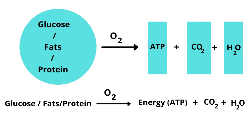Aerobic energy production means the production of energy with oxygen. Energy can be generated over 2 to 45 minutes during long periods of activity at very low intensities. Glucose, protein, and fatty acids react with oxygen to produce energy, releasing carbon dioxide and water as by-products.